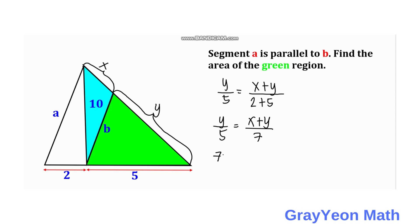So we have 7y equals 5x plus 5y. Continuing, 7y minus 5y equals 5x, so 2y equals 5x. Simplifying, dividing both sides by 2, y equals 5 halves of x.